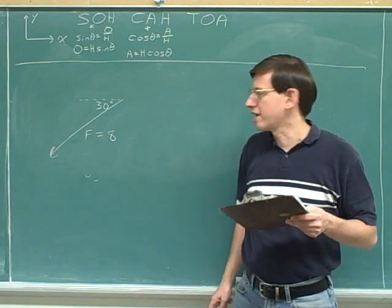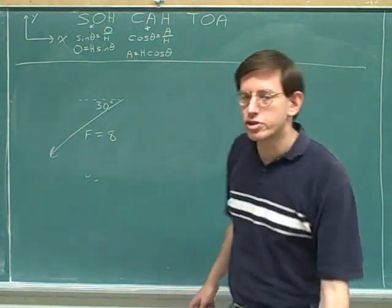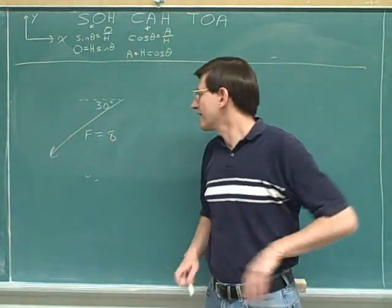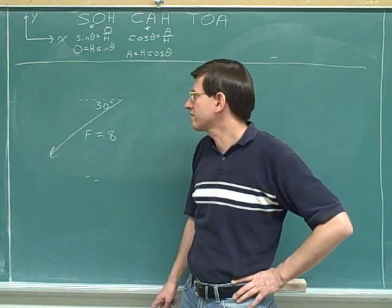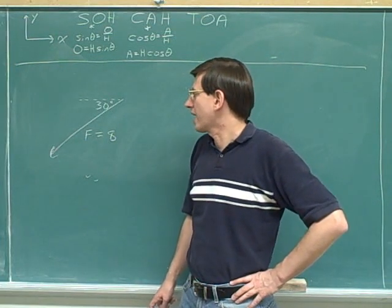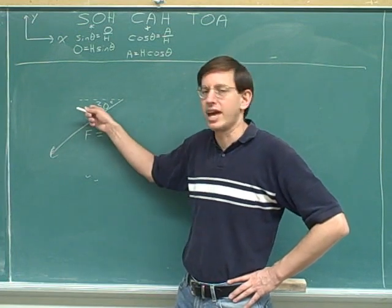First thing we have to do is draw that right triangle. We need to draw the right triangle that uses the overall vector as the hypotenuse, and the legs have to be parallel to the axes, and it would be nice if we could include the angle that we were given.